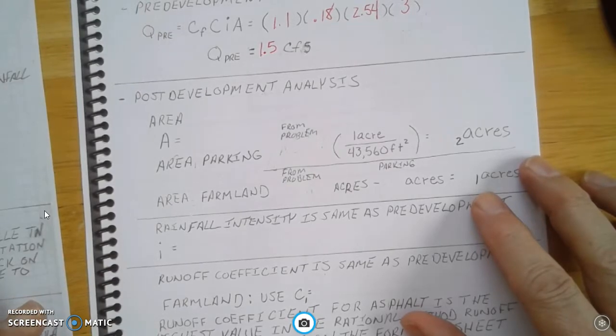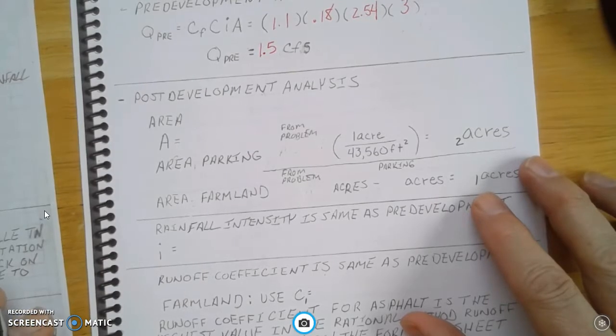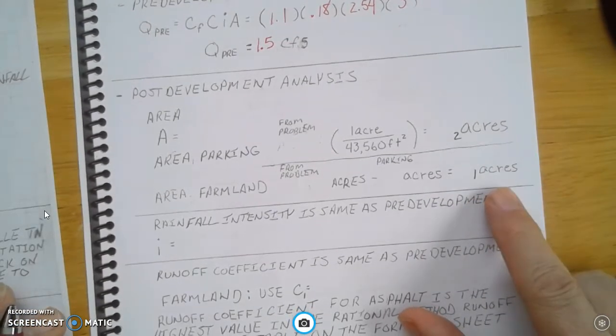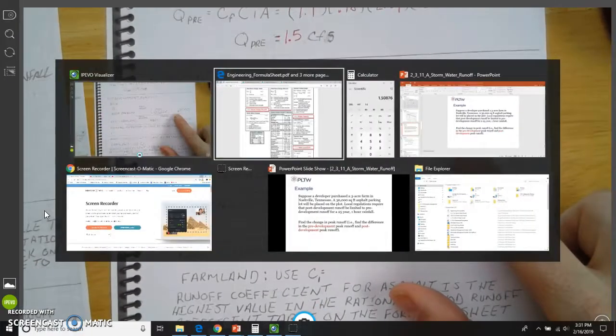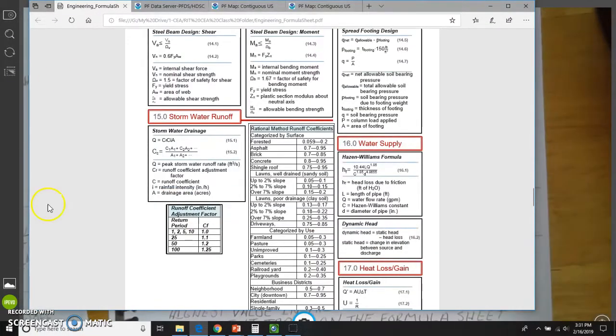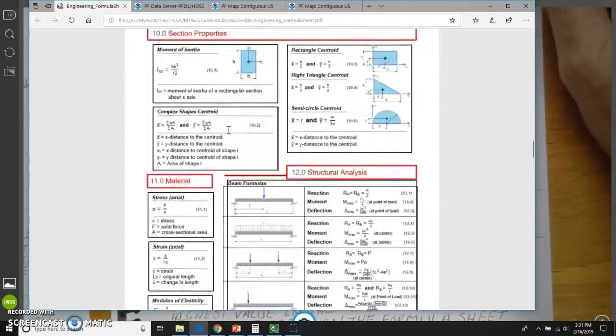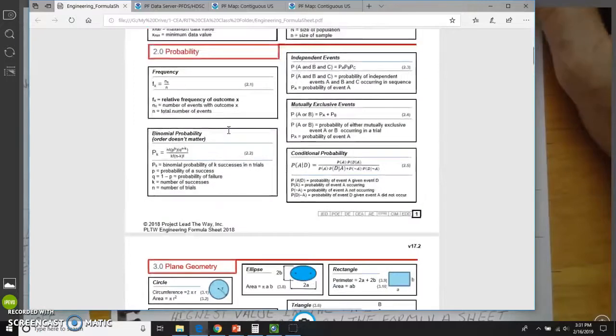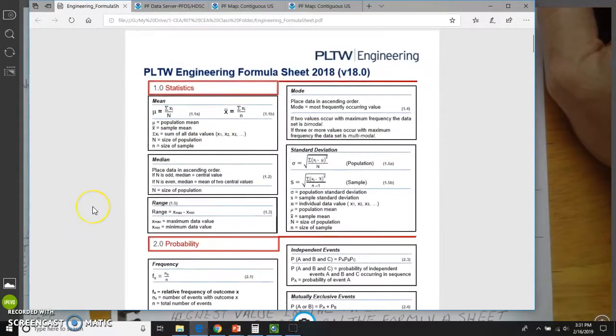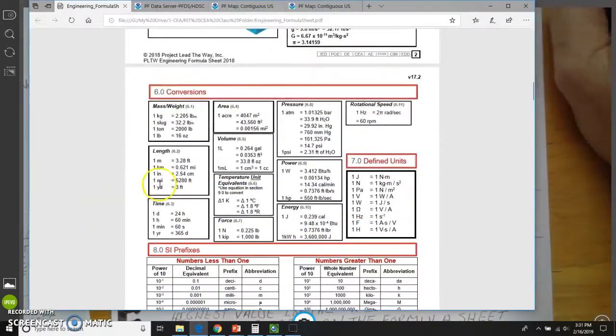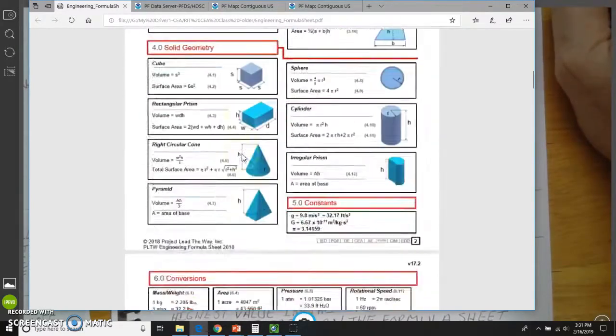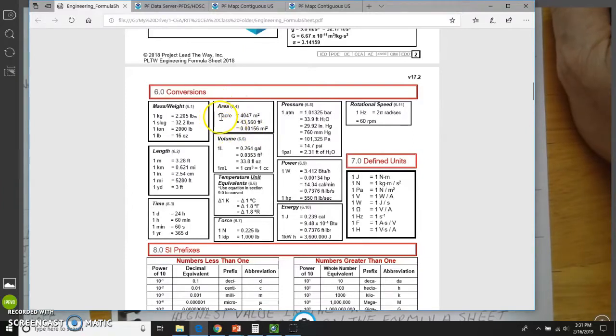So I'm going to show you how to calculate square feet into acres, and also the acreage of the farmland. So the first thing is, let's do the area of the parking lot. I'm going to go to my formula sheet here, all the way up to the very first page. Here it is, the third page. And you see area. And it says one acre equals 43,560 feet squared.